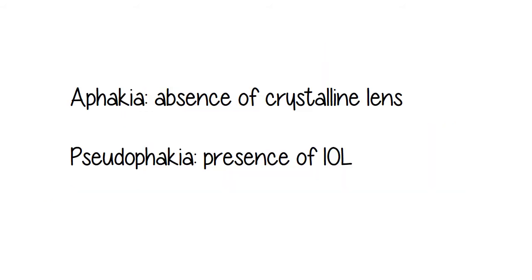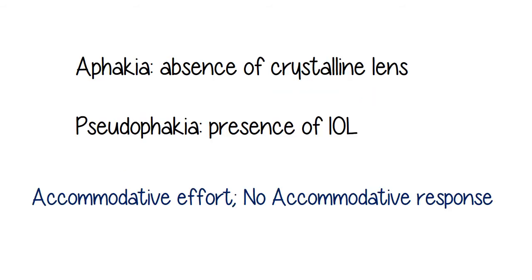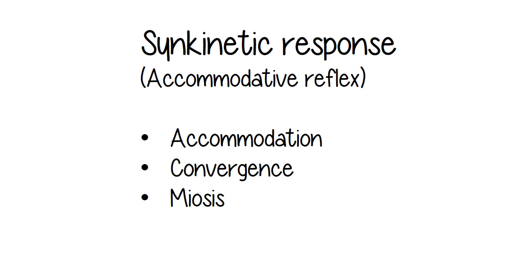So the accommodative response is the increased convexity of the crystalline lens. So for an aphakic patient and a pseudophakic patient, aphakia being the absence of the crystalline lens. So an aphakic patient wouldn't have a lens. And a pseudophakic patient also wouldn't have a lens, but they would have an intraocular lens implant. Each of those patients would not have an accommodative response. They would still have an effort because the ciliary muscle could still contract, but there's no crystalline lens there to respond to it.